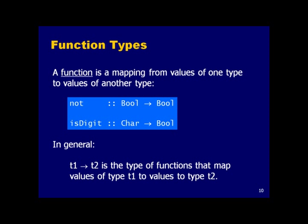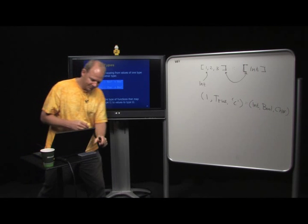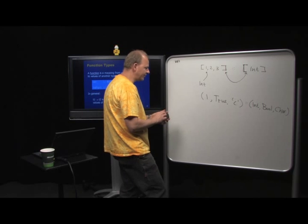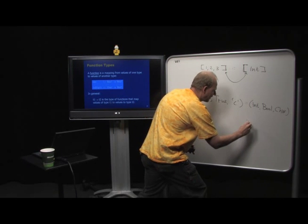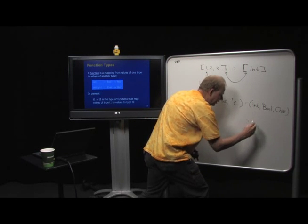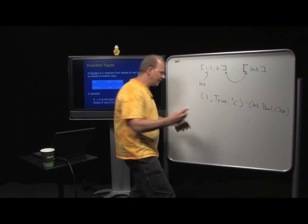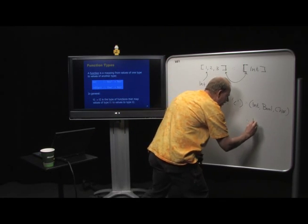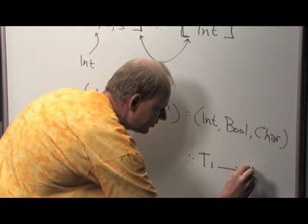Here are two examples of function types. The function `not` takes a Bool and returns a Bool. The function `isDigit` takes a Char and returns a Bool, indicating whether that character is a digit. In general, the type of a function is written as `T1 -> T2`.